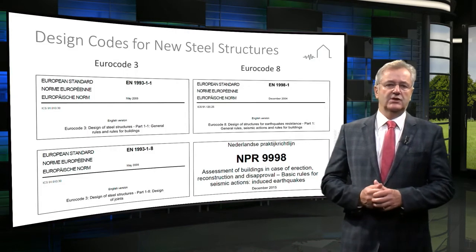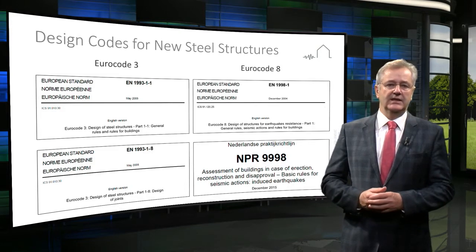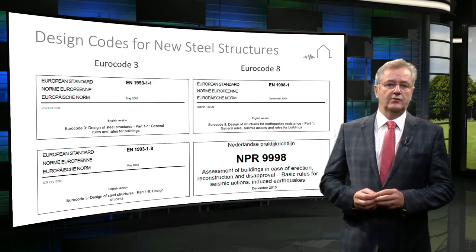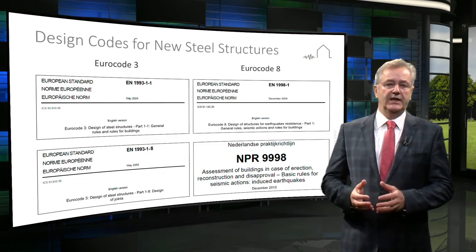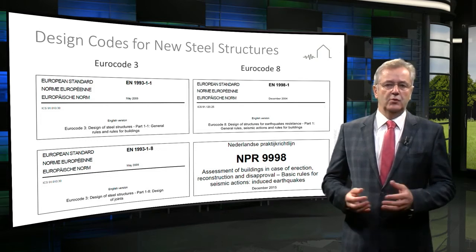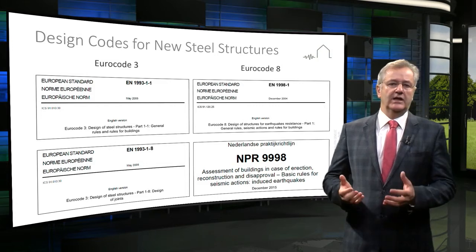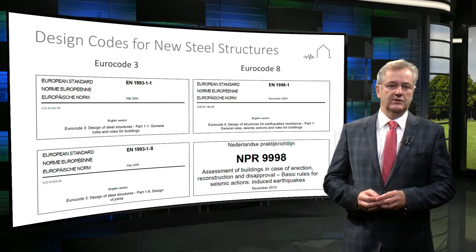For design of new steel structures, designers need to comply with the NPR 9998 Dutch guidelines, the relevant parts of Eurocode 3 design of steel structures and Eurocode 8 design of structures for earthquake resistance. They are supported in doing so correctly by numerous literature, design guides and the background reports about Eurocodes.